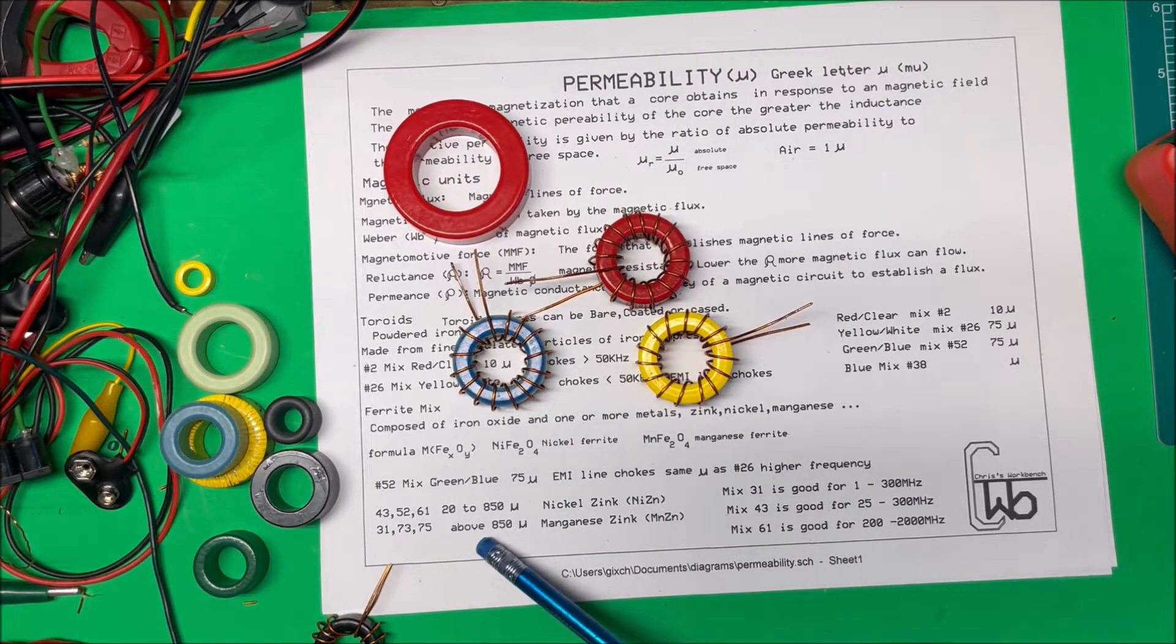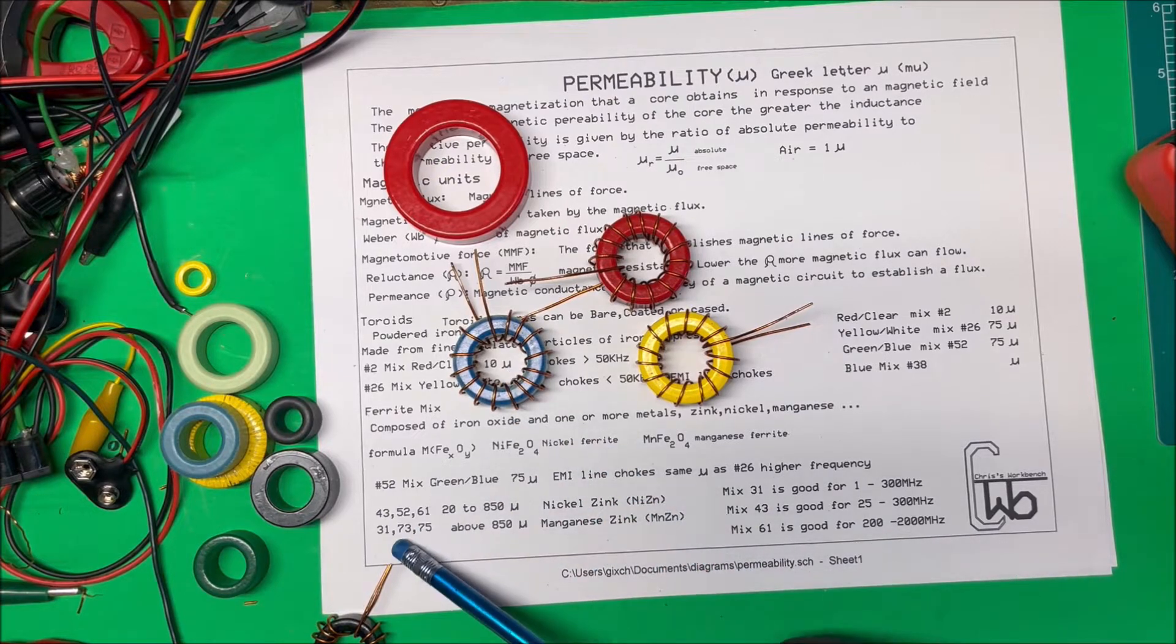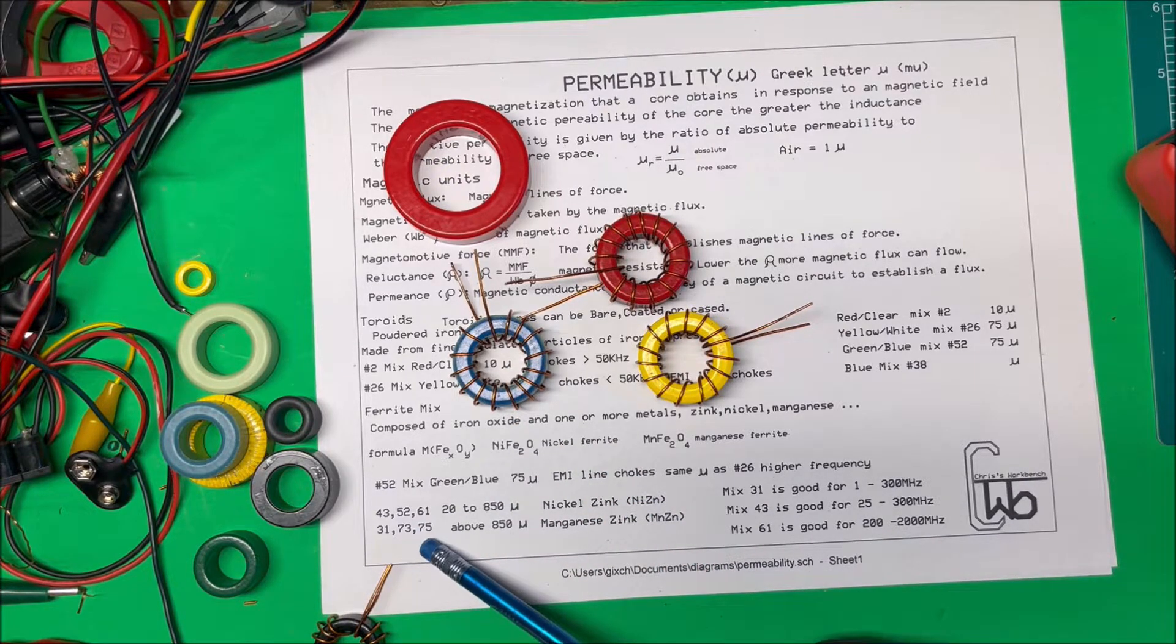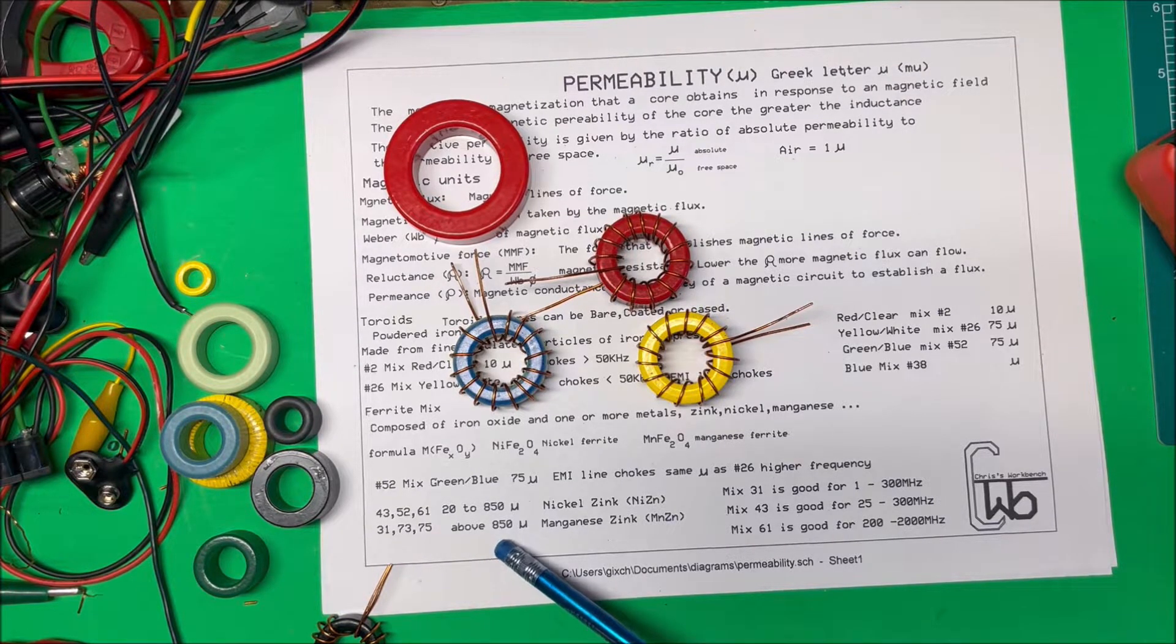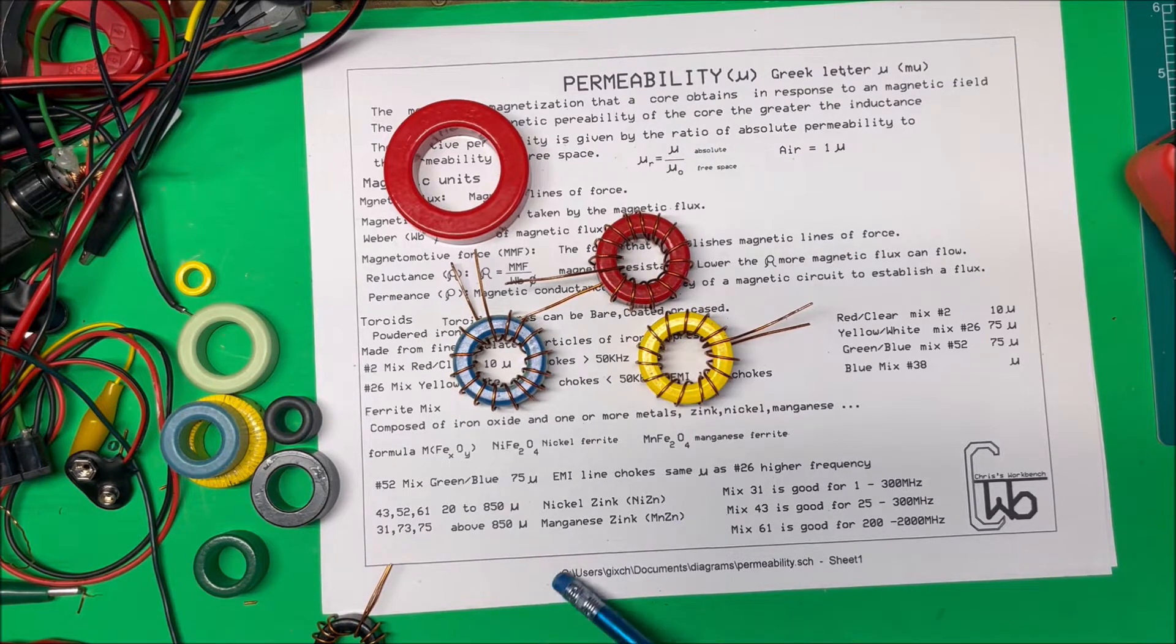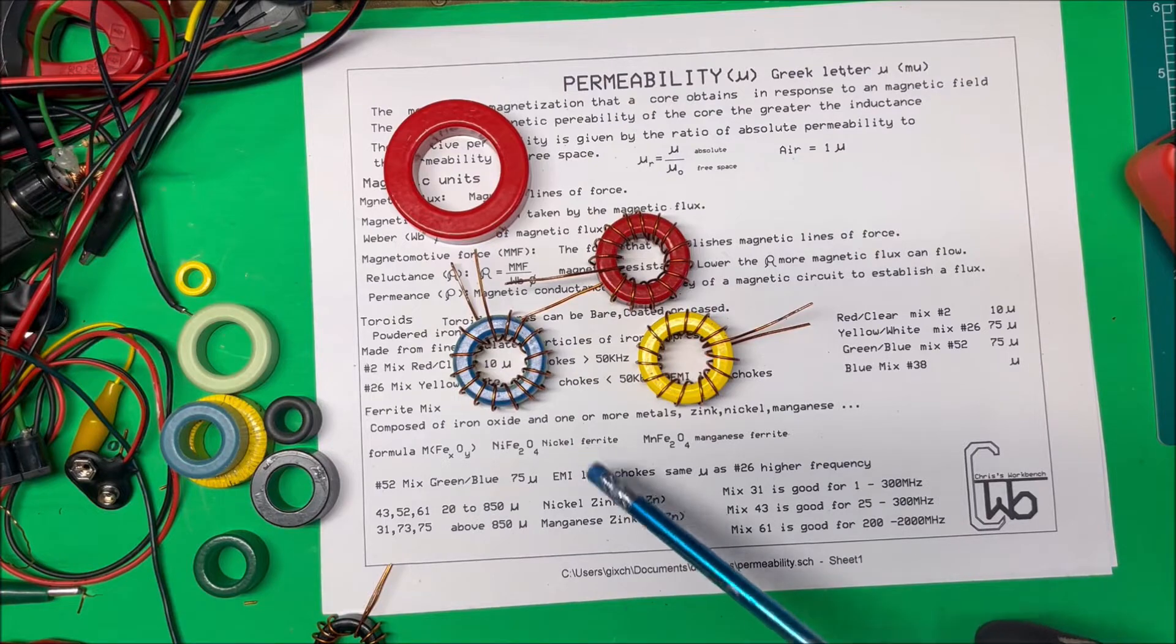And then they have, above this one, you got 31, I don't think I have one of those, 73 and 75. Those are all above a permeability of 850. And those are usually magnesium zinc and iron oxide.